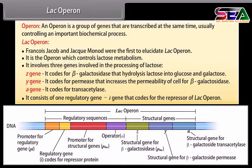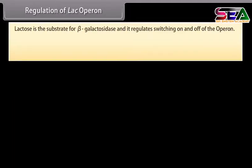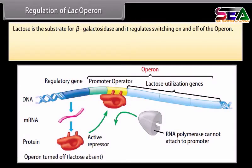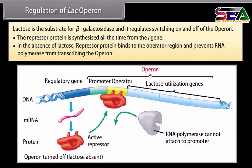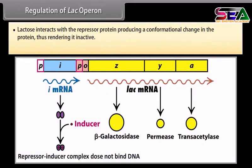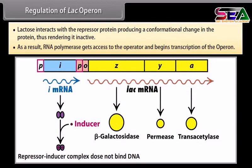It also consists of one regulatory gene, the I gene, which codes for the repressor of the LAC operon. Lactose is the substrate for beta-galactosidase and it regulates the switching on and off of the operon. When lactose is absent, the repressor protein is synthesized from the I gene and binds to the operator region, preventing RNA polymerase from transcribing the operon. When lactose is present, it interacts with the repressor protein, producing a conformational change that renders it inactive. As a result, RNA polymerase gets access to the operator and begins transcription of the operon.